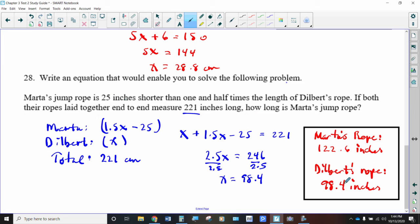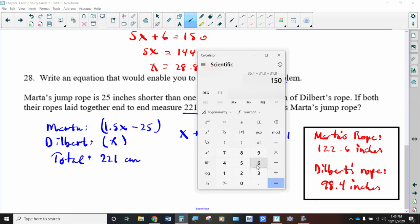And what is MARTA, we have to multiply this times 1.5, then take away 25. So let's see if that works on the calculator. 98.4, which is Dilbert's rope. So when we multiply that times 1.5, we get 147.6. Now when we subtract 25 from that, because it's 25 inches shorter than 147.6, you get 122.6. And now, how do we know that this is correct? Add 122.6 to the 98.4, and you should get 221. And you get 221. So we can declare that as our answer.